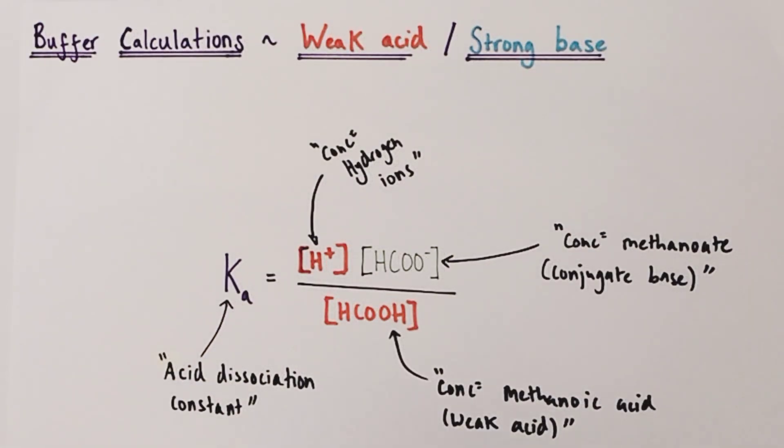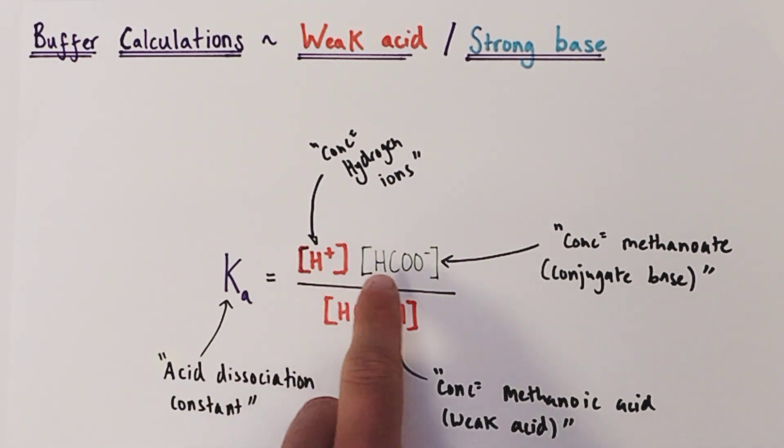What we have here is an equilibrium expression known as a Ka expression, specifically for the weak acid methanoic acid. Ka is the acid dissociation constant, a value which tells us about the extent to which that acid will dissociate. The expression itself has hydrogen ion concentration and conjugate base concentration, in this case methanoate ions, divided by the concentration of the weak acid itself. We're going to manipulate this Ka expression through our calculation, rearranging for the hydrogen ion concentration to work out the pH of a buffer produced by reacting a strong alkali with a weak acid.